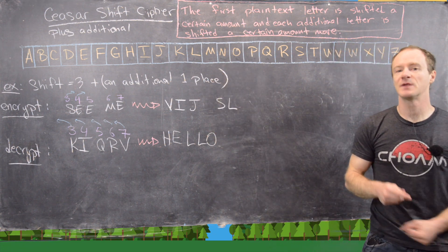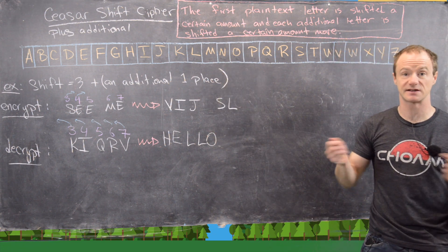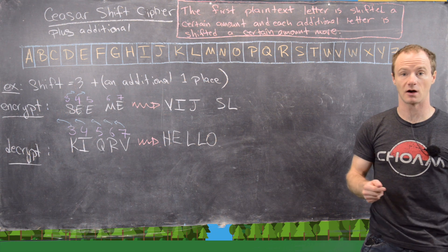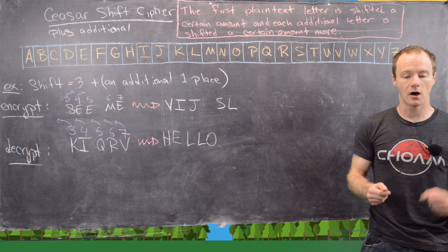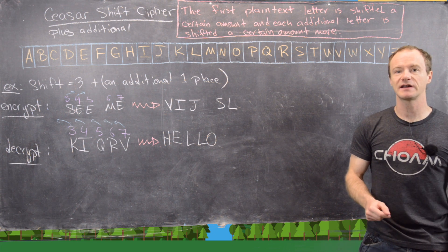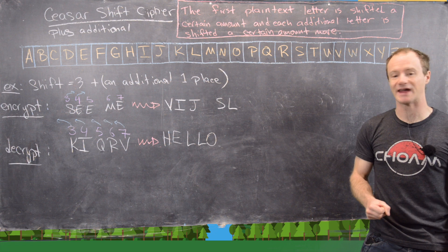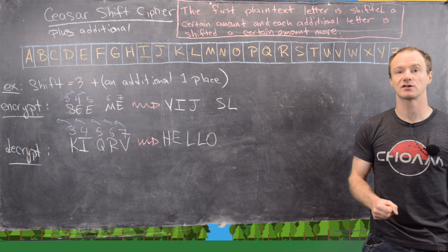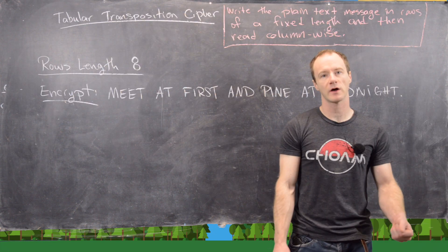This cipher is harder to break because everything is not shifted the same amount, but it's still not as secure as more modern systems. Next, we're going to look at something called a tabular transposition cipher.